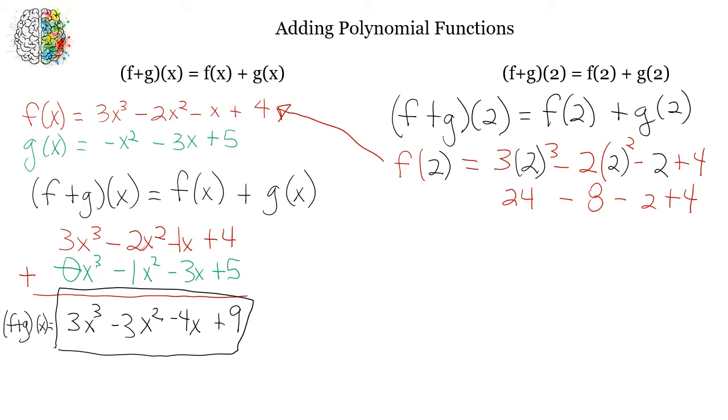minus 2 plus 4. And then we're going to go ahead and just calculate that. So if I take 24 minus 8 minus 2 plus 4, that's going to give me f of 2 equals 18.